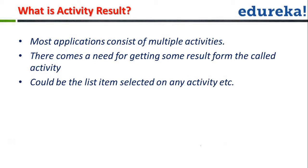What happens is you start the first activity — suppose the first activity gives you an option, a button with the name 'Choose'. When you click this Choose button, you go to the second activity. In this second activity there are two or three options: are you interested in sports, are you interested in music, are you interested in XYZ?